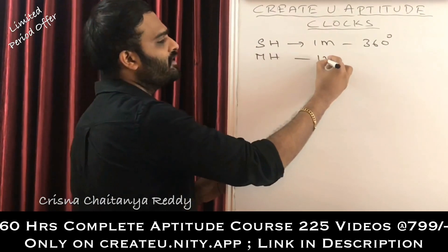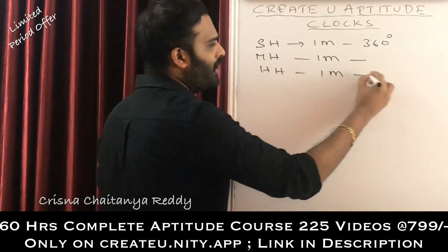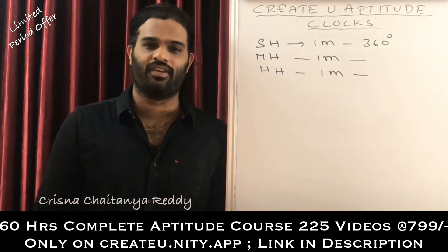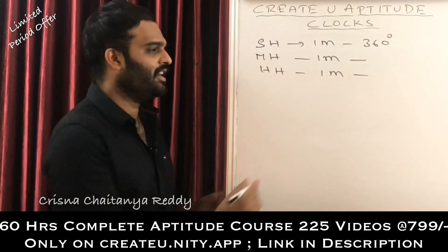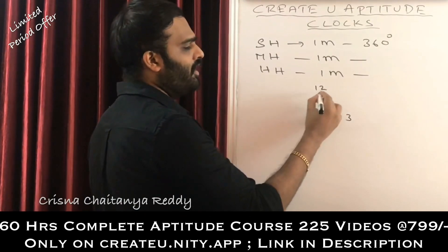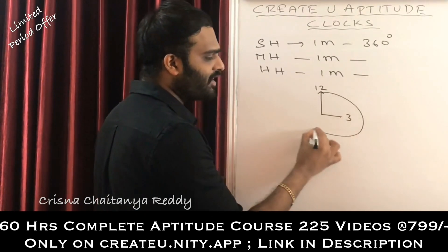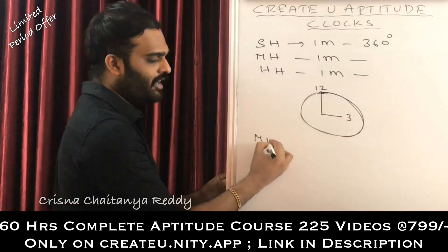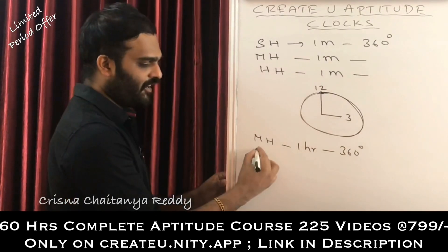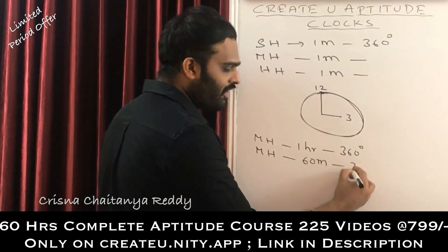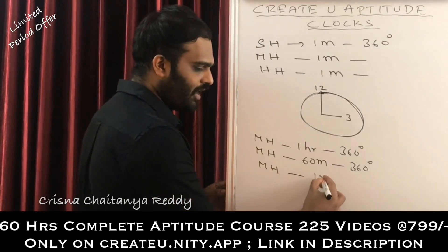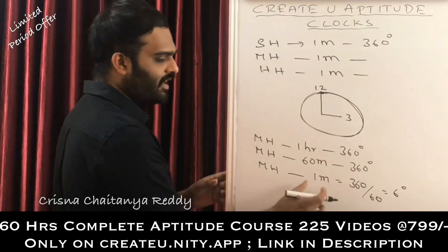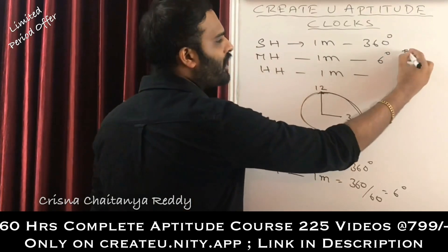Now let us understand how many degrees the minutes hand covers in one minute. Imagine the time is 3 o'clock and it has to become 4 o'clock. The minute hand starts on 12 and completes one full cycle — so in one hour it covers 360 degrees. That means in 60 minutes it covers 360 degrees, so in one minute it covers 360 ÷ 60 = 6 degrees. The minutes hand covers 6 degrees per minute — this is very important information.